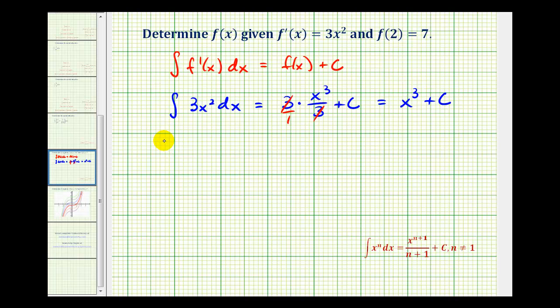So we know that f(x) must be equal to x³ plus c. This is a family of functions that have a derivative of 3x². But since we're also given that f(2) equals 7, we can determine the exact value of c to determine what's called the particular solution to this problem.